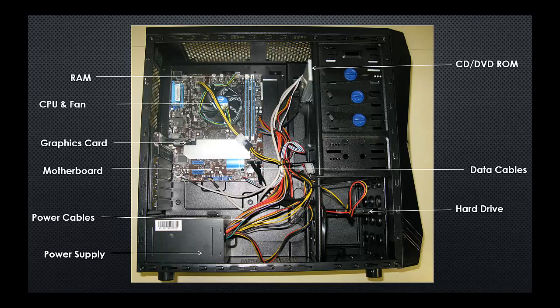The other major components inside the case look like small boxes – we've got the power supply, hard drive, CD drive, and possibly a floppy drive, though we don't tend to use those so much anymore. There are two types of cables inside the case: data cables, which connect devices to each other, and power cables, which supply power. If a cable is flat, it's more than likely a data cable, but to know exactly what type you're dealing with, you'll have to trace it from its source to its destination.